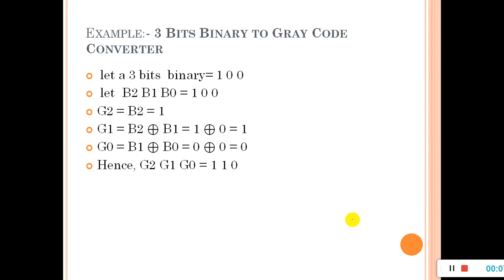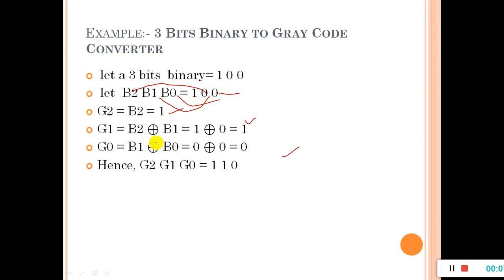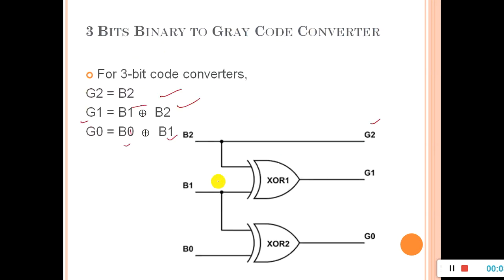Let's work through an example with a three-bit binary number. We have B0, B1, and B2 — B2 is the MSB. To convert to gray code: G2 equals B2, so G2 equals one. Then G1 equals B2 XOR B1, which is one XOR zero, giving one. Then G0 equals B1 XOR B0 — these are the same bits, so we get zero. So the gray code is 1, 1, 0.